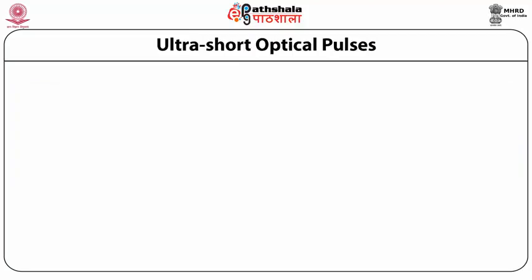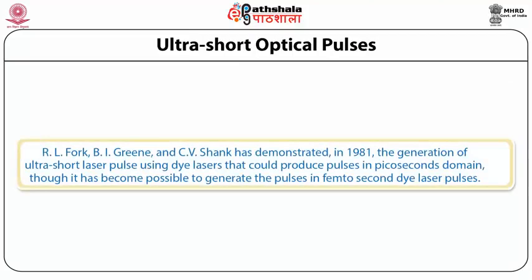There can be generation of ultra-short optical pulses. Shank and colleagues demonstrated in 1981 the generation of ultra-short laser pulses using dye lasers that could produce pulses in the picosecond domain, and it has since become possible to generate pulses in the femtosecond regime using dye lasers.